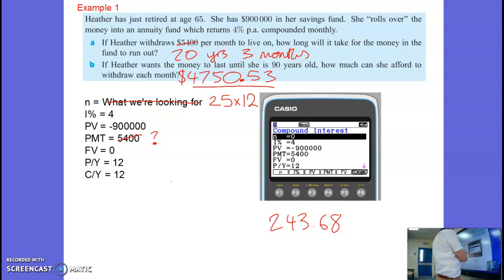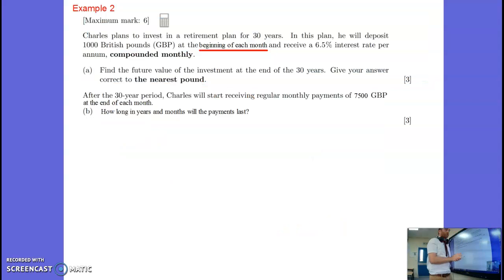Okay, let's have a look at another example. And this example, I've tried to mix in a lot of things that will just little twists that make this a harder question. So this is kind of about as hard a question as you would get on annuities here. So Charles plans to invest in a retirement plan for 30 years. He's paying into this annuity for 30 years. He's depositing a thousand pounds at the beginning of each month. Now, this beginning or end of each month does change the maths a little bit. And it changes what we put in a calculator. I'll show you that in a minute. He's receiving 6.5% interest. It's pretty good compounded monthly. So let's find the future value of the investment after 30 years.